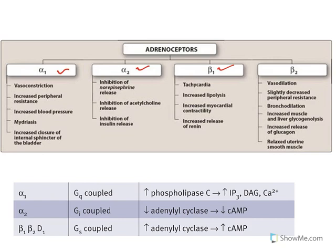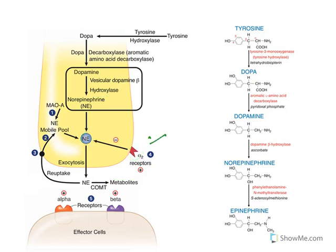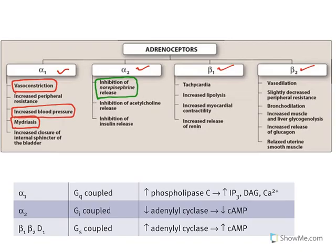There are four major adrenergic receptors. Alpha-1 receptors, present on blood vessels, cause vasoconstriction and increased blood pressure; in the eye they cause mydriasis (pupil dilation). Alpha-2 receptors are autoreceptors — when norepinephrine binds them, it inhibits further norepinephrine biosynthesis and release, acting as a negative feedback mechanism. Beta-1 receptors, prominent in the heart, increase heart rate (tachycardia), increase cardiac contractility, and stimulate renin release — all cardiotonic effects.